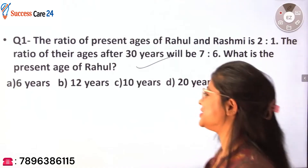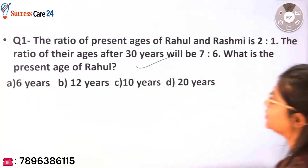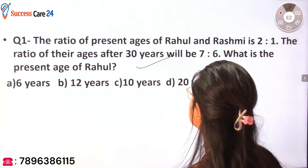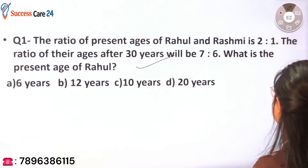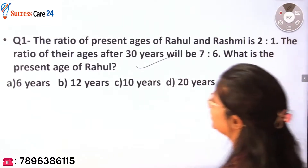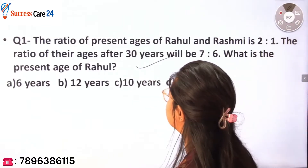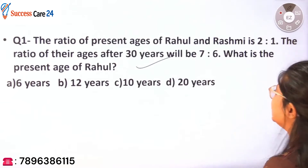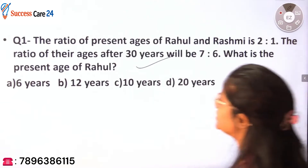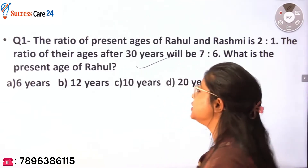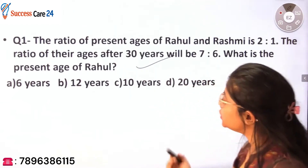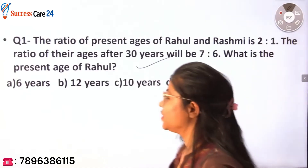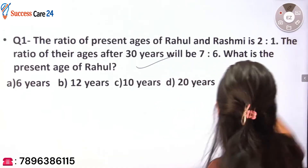So here you are given: the ratio of present ages of Rahul and Rashmi is 2 is to 1. The ratio of their ages after 30 years will be 7 is to 6. Then what is the present age of Rahul?